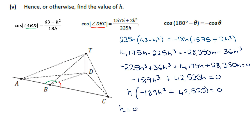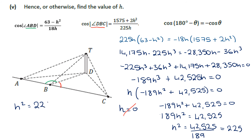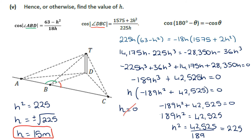H = 0 is one solution but it's not valid since the pole must have some height. Working with the bracket: −189H² + 42525 = 0, so 189H² = 42525, giving H² = 42525/189 = 225. Therefore H = ±15, but since H is a height only the positive value is valid, so H = 15 metres.